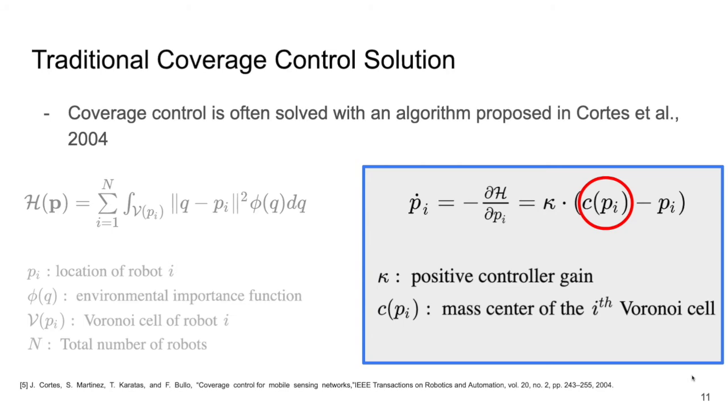Again, note that a robot's controller depends on being able to sense its entire Voronoi cell, because it looks for the mass center of that Voronoi cell, circled in red. Next, we will show that when a robot cannot see its entire Voronoi cell, undesired behavior arises.